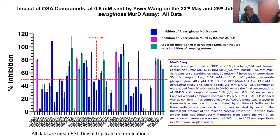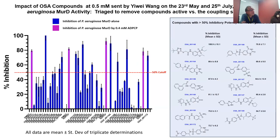In the full dataset, the pink bars represent inhibition by the positive control (0.4 mM ADBC), the green bars are hits against MurD that also hit the coupling system (discounted for now), and the blue bars show inhibition of the enzyme by the test compounds. After triaging out the coupling enzyme-active molecules, 11 compounds break 50% inhibition against MurD.